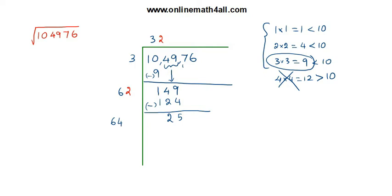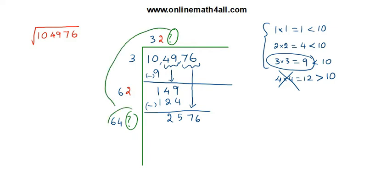The next step is to bring the next pair down. When you bring this next pair down, it will be seventy-six, so the current working number becomes two thousand five hundred and seventy-six. Now, as I explained before, I put a question mark in the quotient and in the divisor, and you have to take the same number at both places. After that, you multiply the number by this three-digit divisor, and it must equal two thousand five hundred and seventy-six.